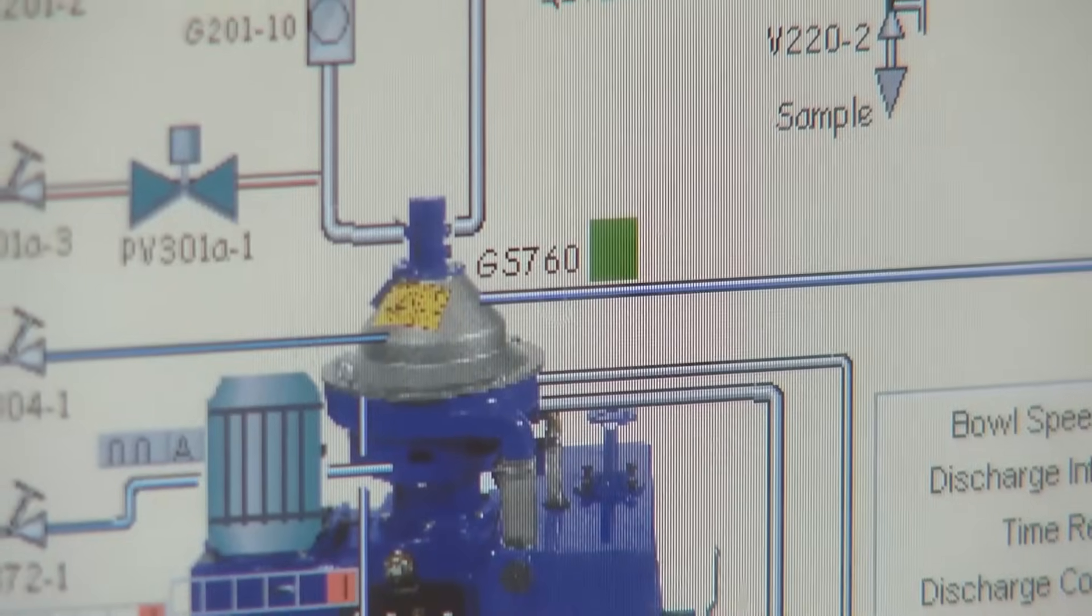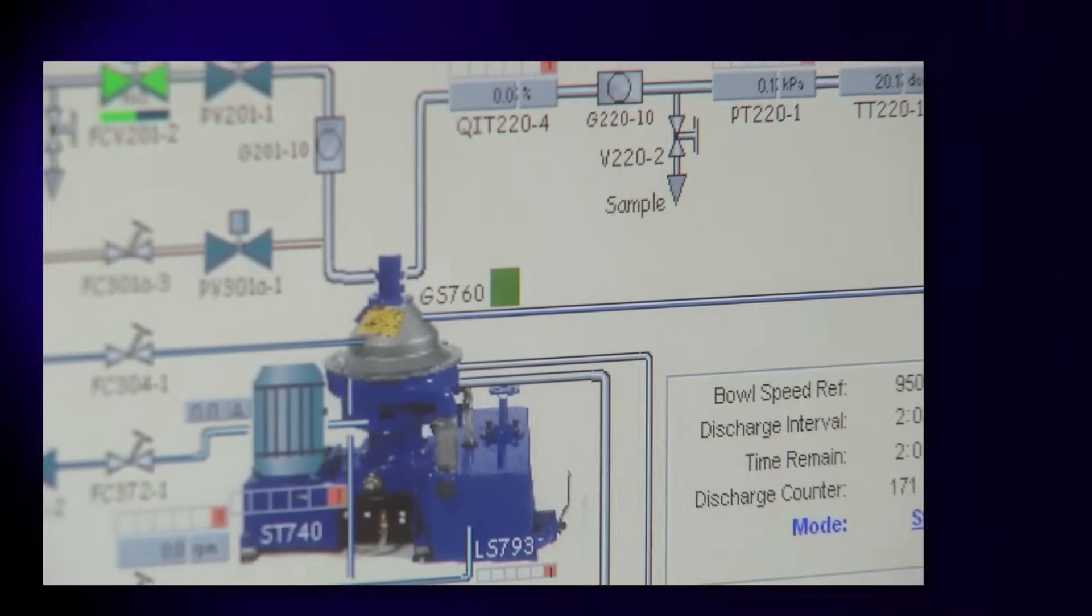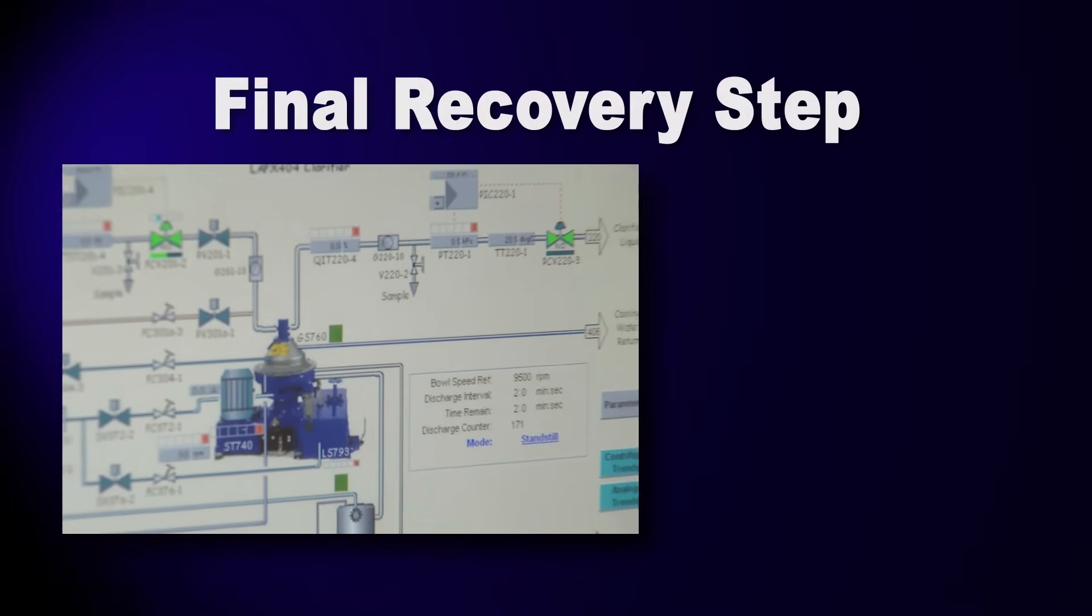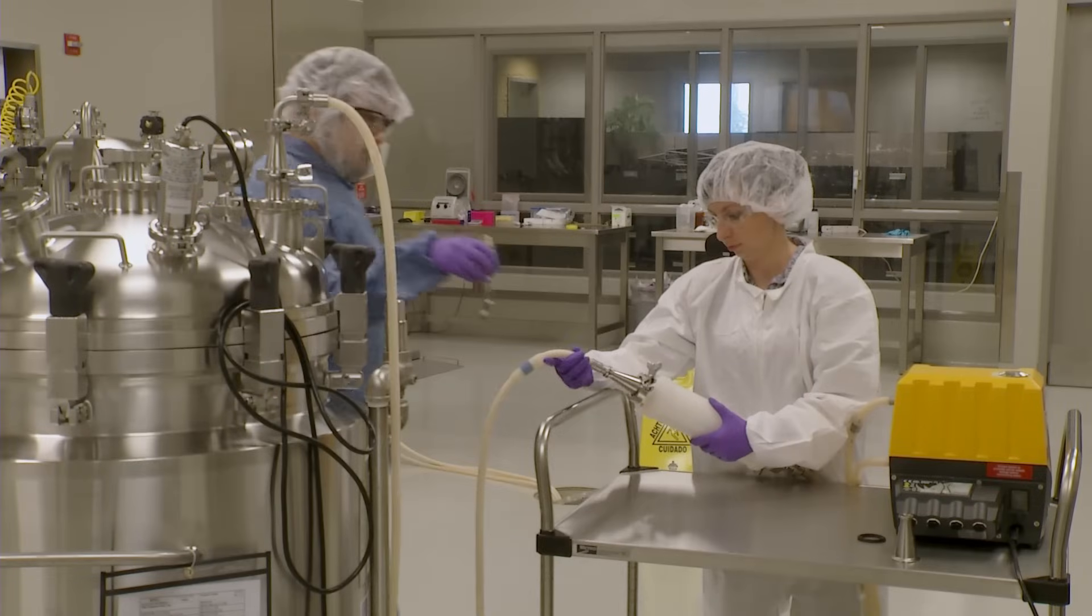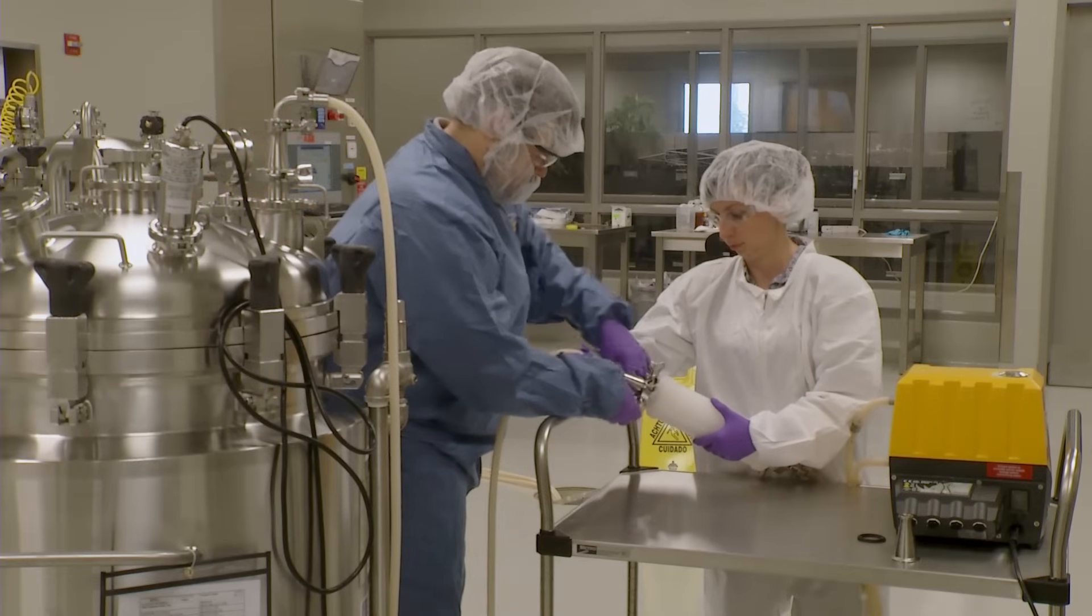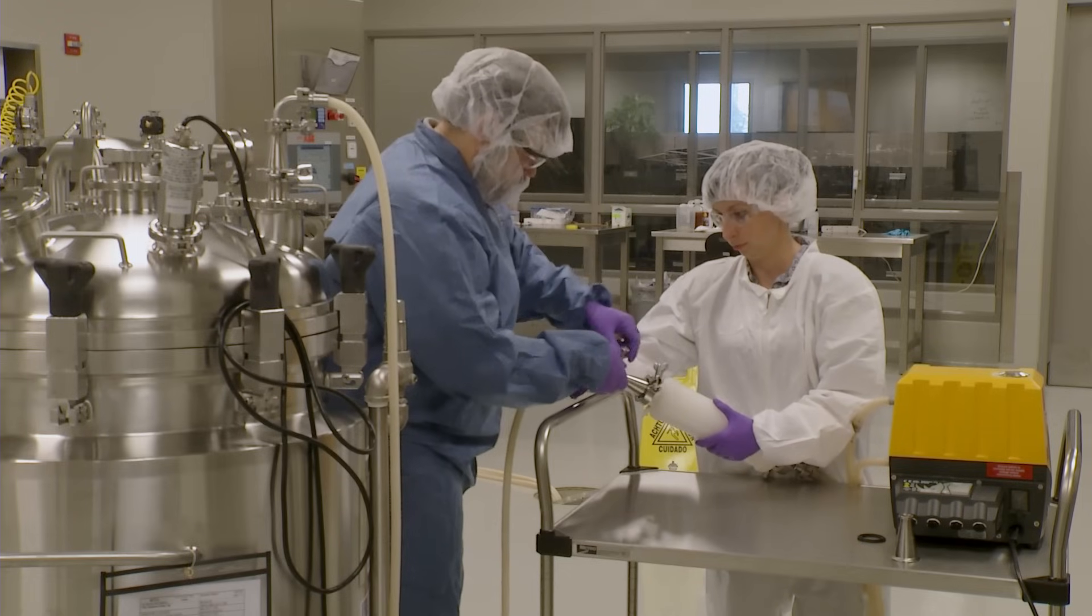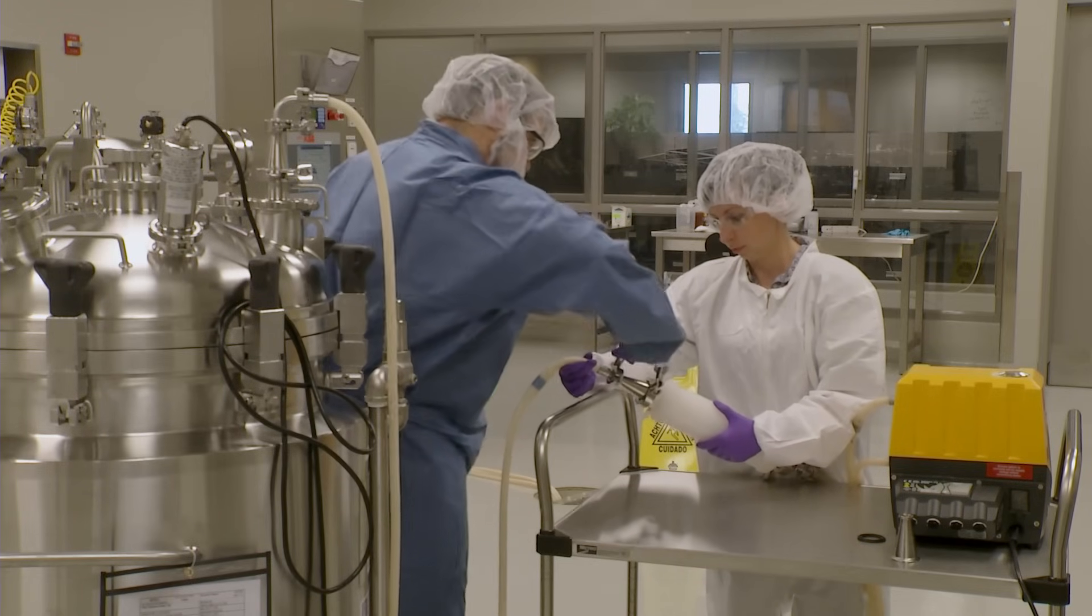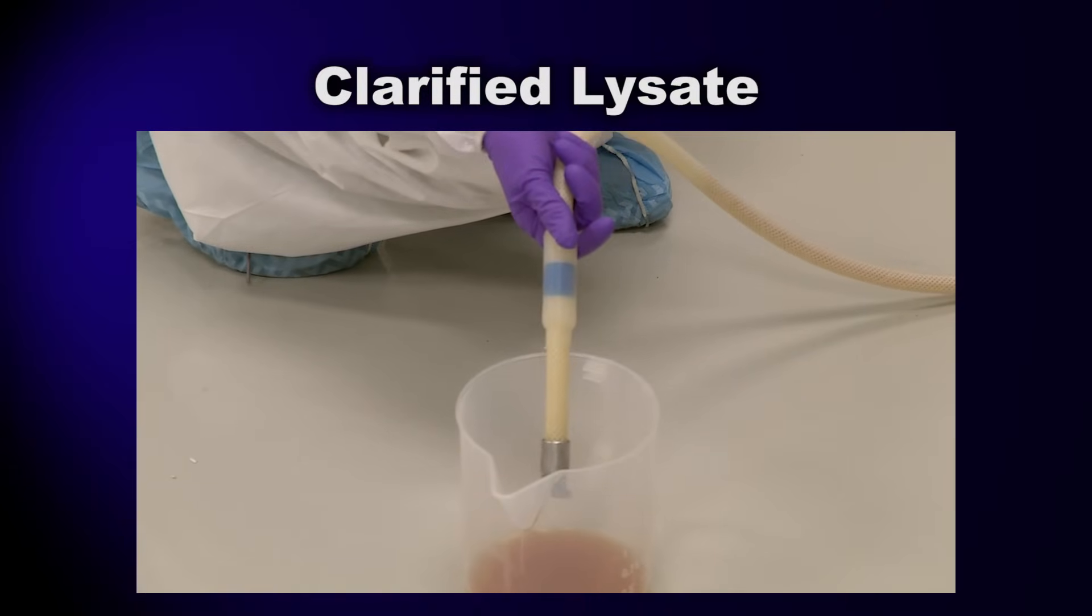Although the centrifuge has removed almost all of the cell debris, some small particles still remain. We'll remove those with our final recovery process step: filtration. The centrifuge lysate is pumped through a 0.22 micron filter. This filter is fine enough that it removes virtually all of the remaining solid materials. At this point, the process stream is referred to as clarified lysate.